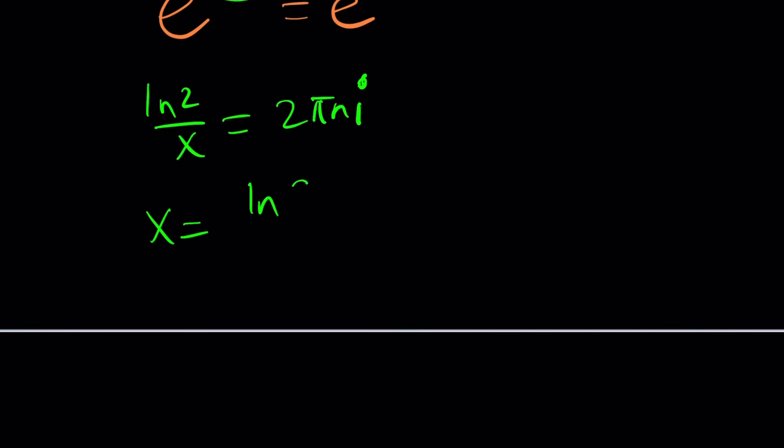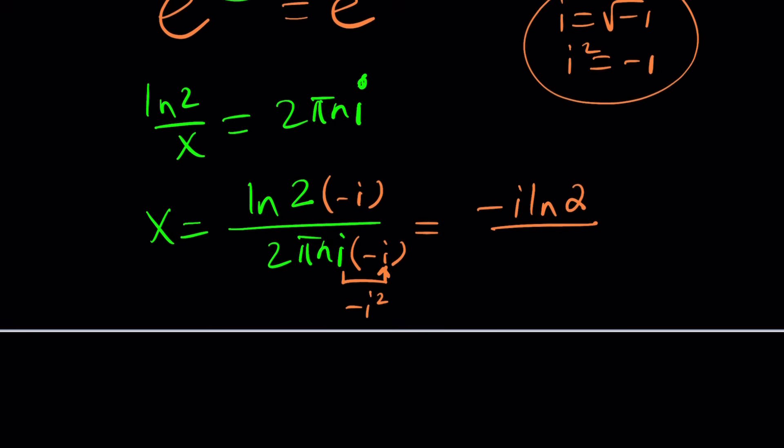Cross multiply or just switch these around because they're being multiplied. x becomes ln 2 divided by 2 pi n i. Of course, we have to do a little bit of work on this because you don't want i in the denominator. Multiply by negative i and then you're going to get something like this. negative i ln 2 divided by... Now, this is negative i squared. Oops, I forgot to say. i is the square root of negative 1. So i squared is equal to negative 1. Something that you should never, ever forget. So that gives us a positive 1 because if i squared is negative 1, negative i squared is positive 1. So we get 2 pi n from here. And that should be the answer.